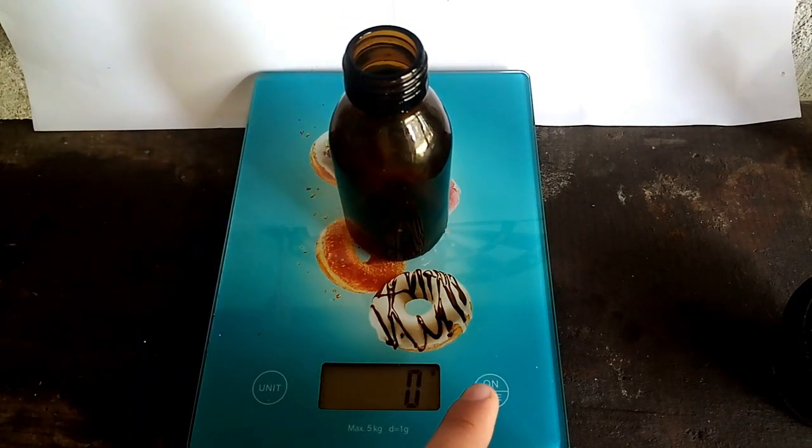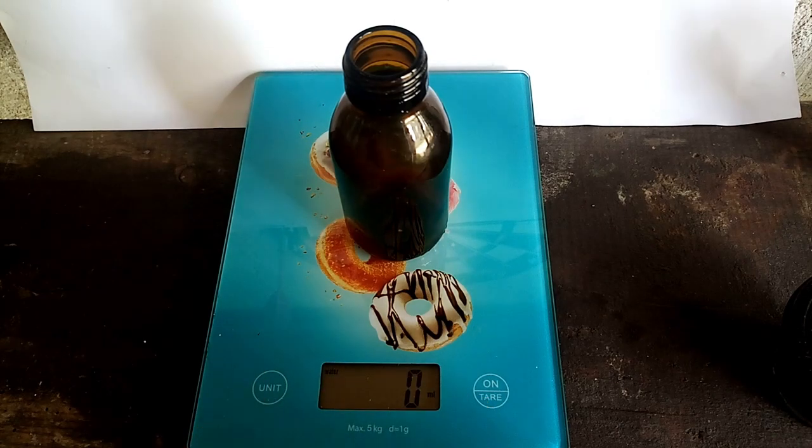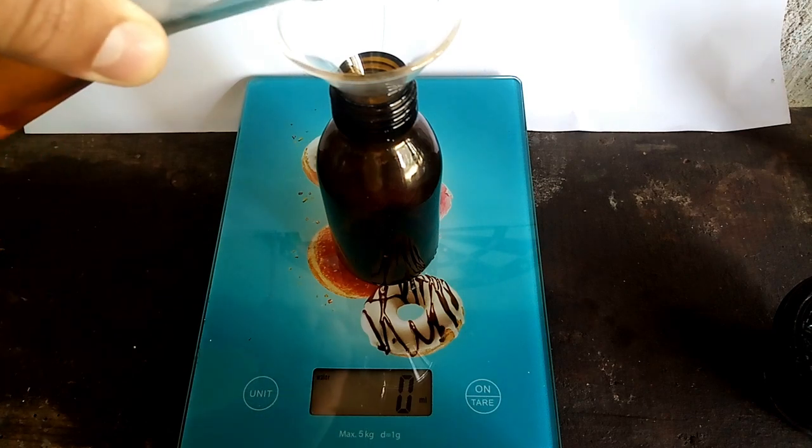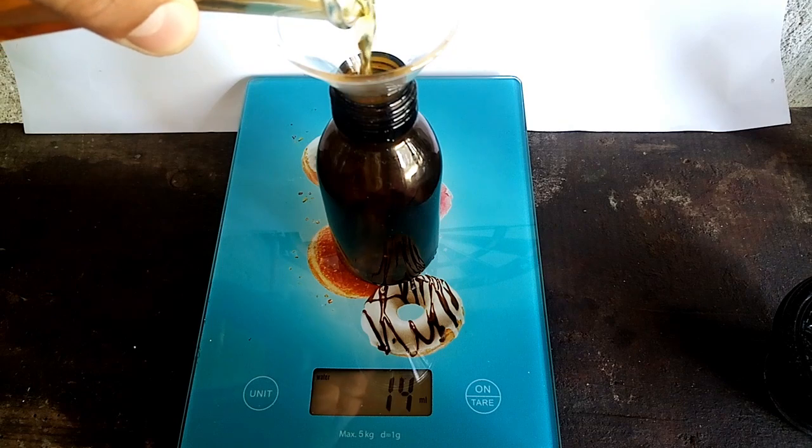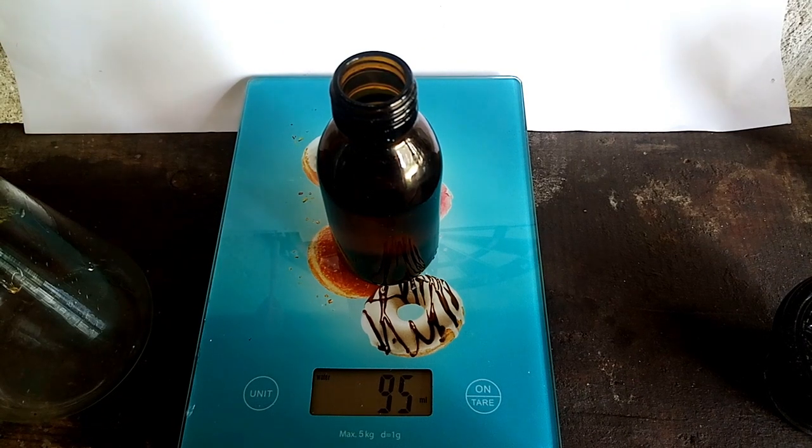It's time to see how much acid I made. From my calculations, the acid concentration is about 35% with a yield of 96 milliliters.